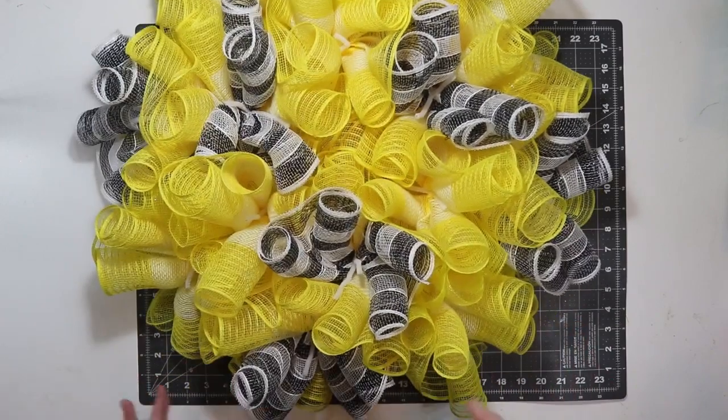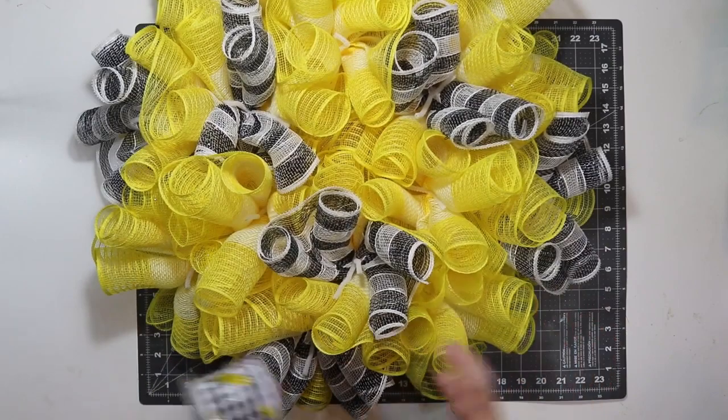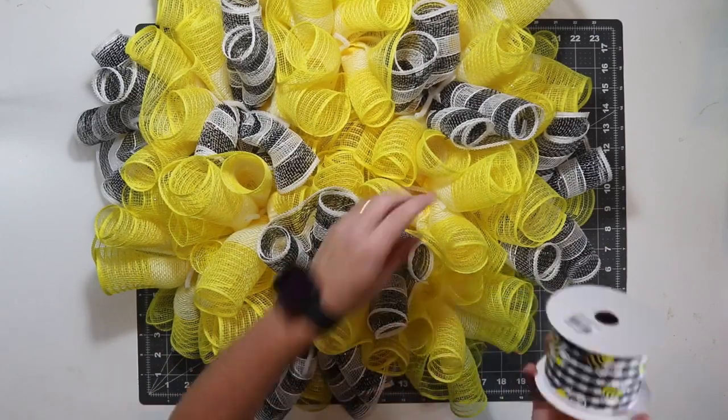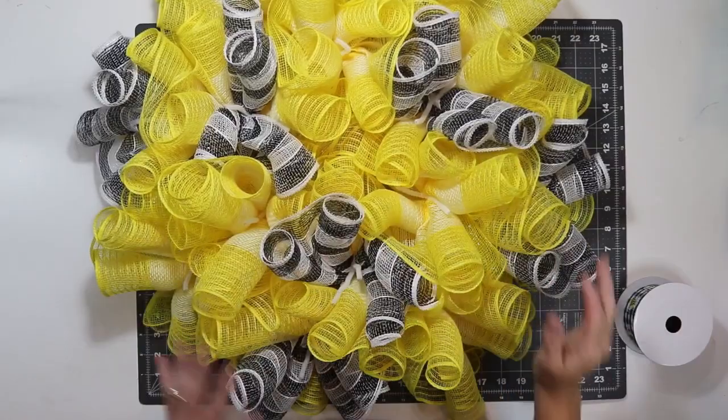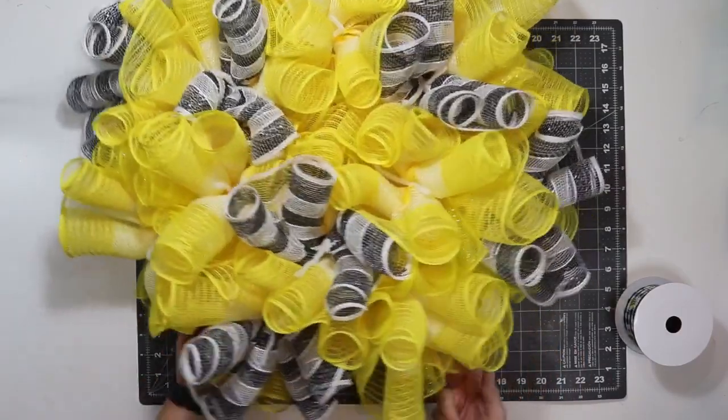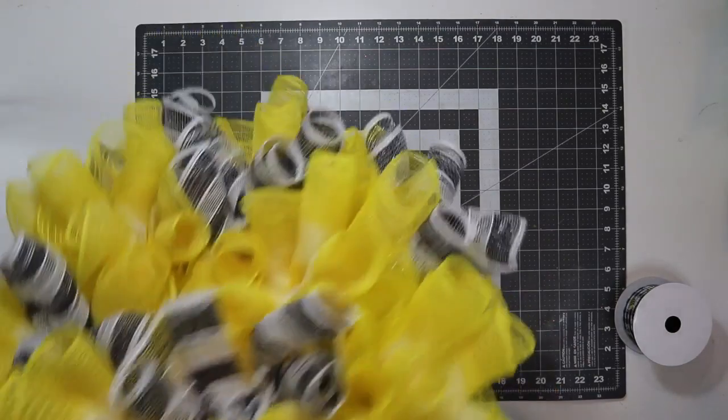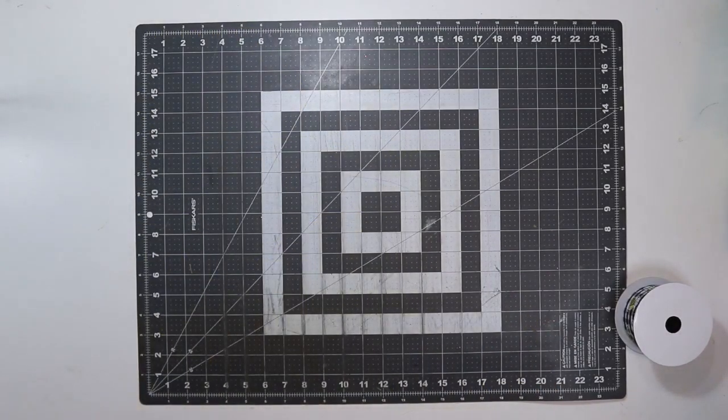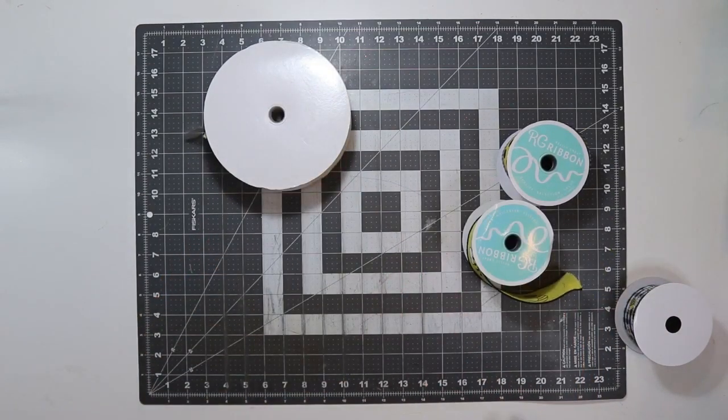I finished adding all my mesh. And I know it looks kind of funny with so much yellow. But I'm going to add this ribbon into this section. So that will pull the black and white into those sections. It looks really cool and it's really full. I really like the curl cruffle method. Where it has the curls and the ruffles.